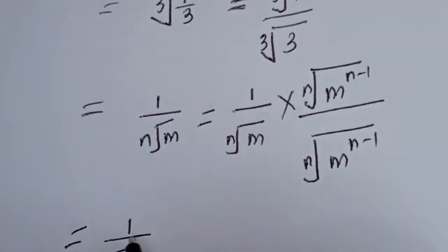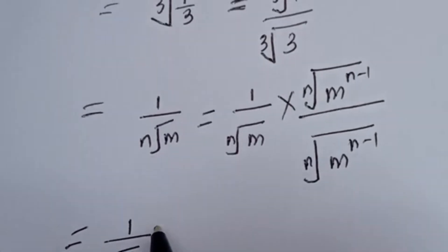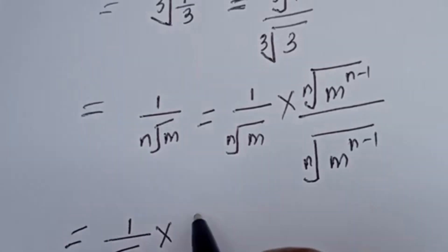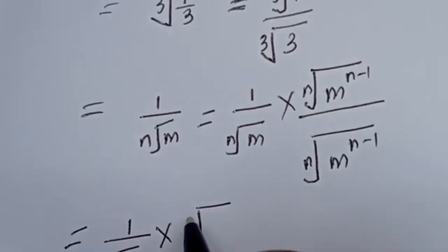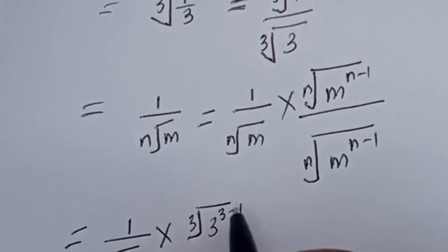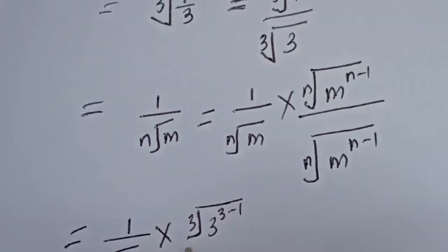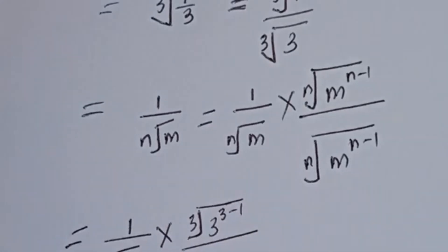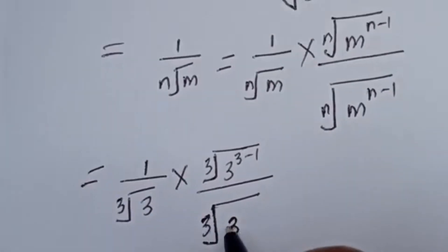Then transforming this, we have 1 over the cube root of 3, multiplied by the cube root of 3 to the power of 3 minus 1, divided by the cube root of 3 to the power of 3 minus 1.